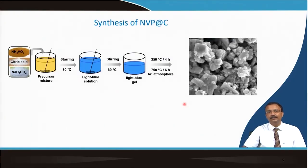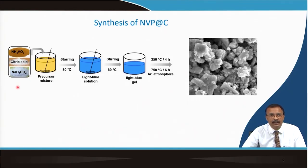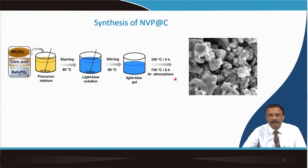It is relatively easy to make this kind of structure. Typically, ammonium VO3, citric acid, and sodium dihydrogen phosphate are mixed together, stirred at 80°C, producing a light blue colored solution. Stirring continues until a gel forms, which is then annealed in argon ambient — because phosphorus should not get oxidized — to finally yield the Na3V2(PO4)3 structure. This simple solution process has the only complication that annealing must be done in argon or inert ambient.